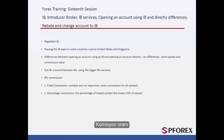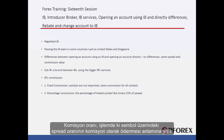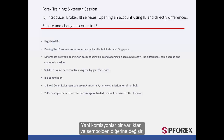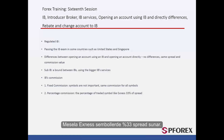The second type is percentage commission, which means that a percentage of the spread on a traded symbol will be paid as the commission. This means that commissions are different from one asset and symbol to the next. For example, Exynos offers 33% of the spreads on symbols.